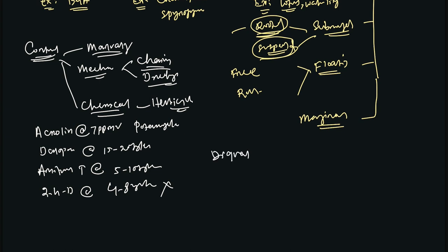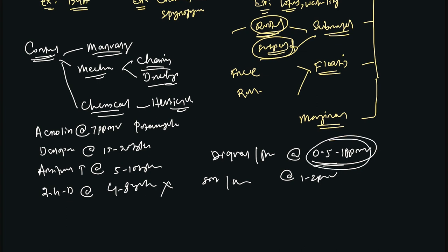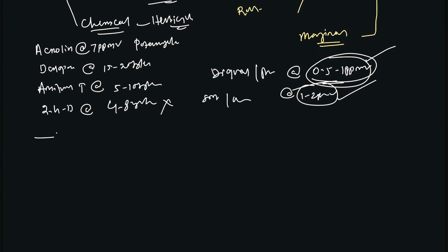Diquat and paraquat can also be used at a concentration of 0.521 ppmv. Simazine, diuron, and monuron can be used for control of algae at 1 to 2 ppmv. For how to calculate the quantity of herbicide needed to prepare these concentrations, refer to other lectures on ppm and percentage concentration calculations.